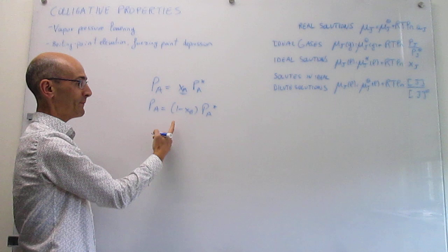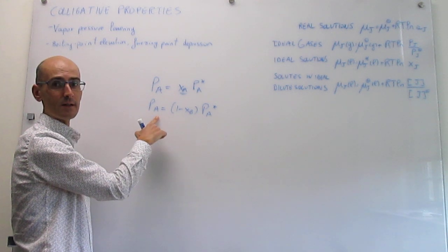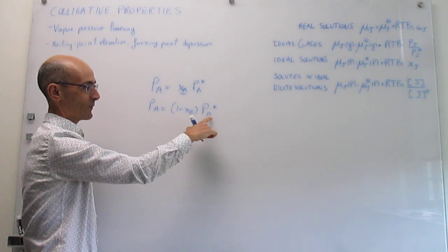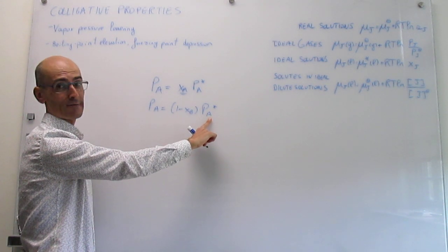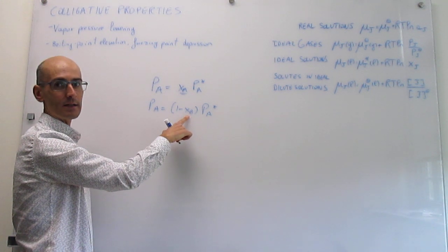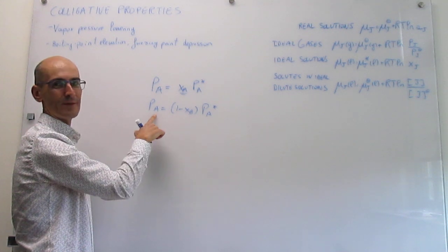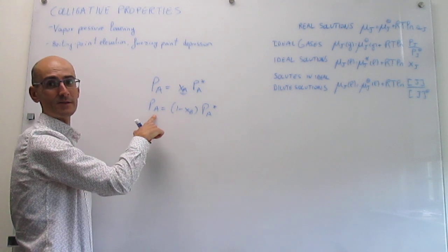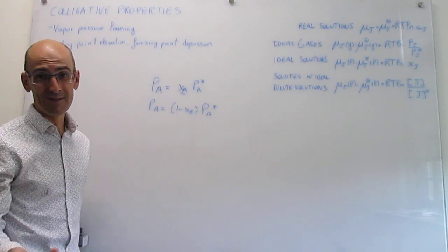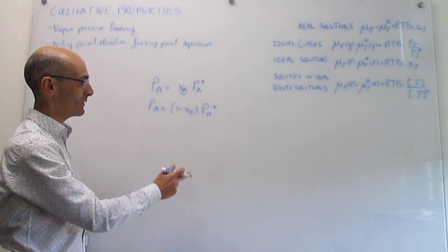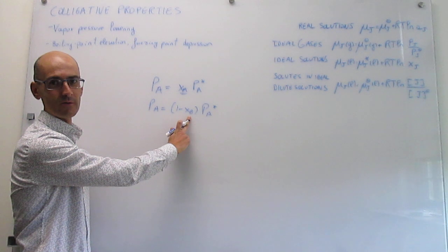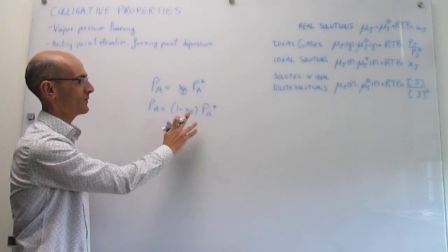Notice that the vapor pressure of the solvent changes when you add something to it. The vapor pressure when pure is simply this value, but if you add something to it — if x_B is larger than zero — then the vapor pressure of that solvent lowers. So Raoult's law is the first example of a colligative property. Notice also that it really does not depend on what you're adding; it only depends on the concentration, not on what type of solute you're adding.